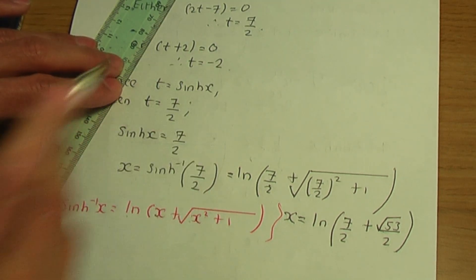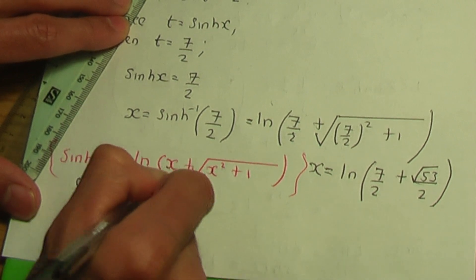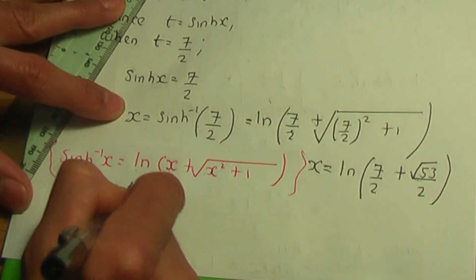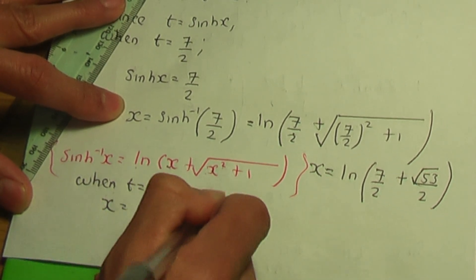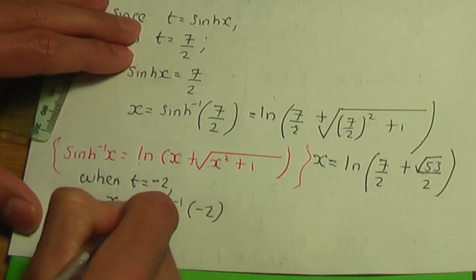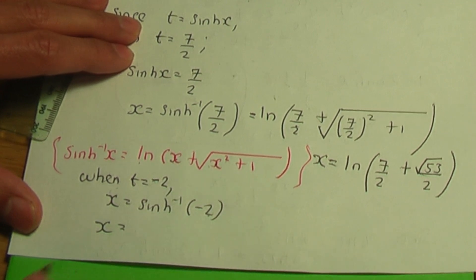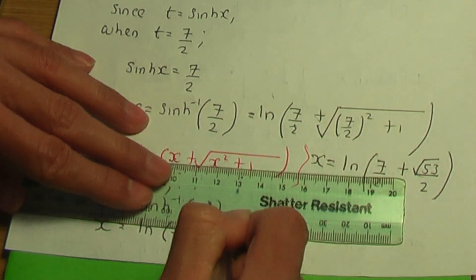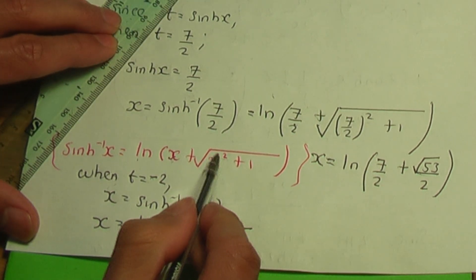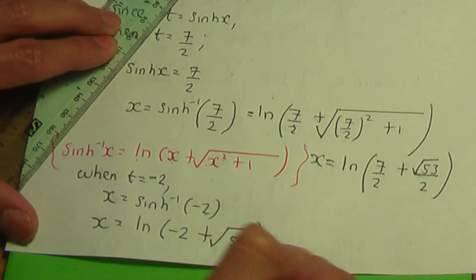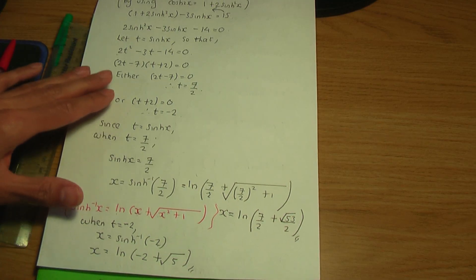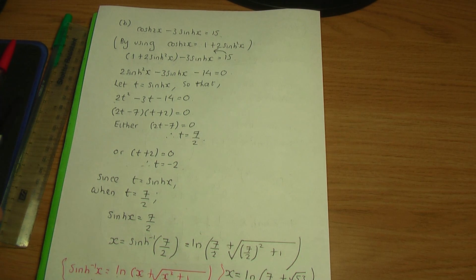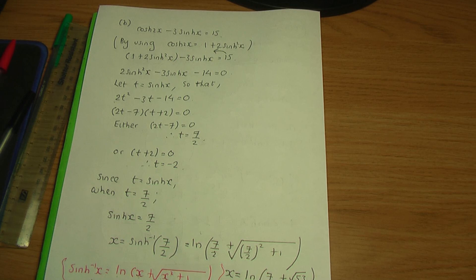For the second value, when t equals minus 2, x equals the inverse hyperbolic sin of minus 2. Replacing x by minus 2 in the definition gives x equals ln of minus 2 plus the square root of 5, since minus 2 squared is 4 and 4 plus 1 is 5. That completes the question. I hope you found this video helpful — do plenty of practice on related problems. A like rating is very much appreciated.